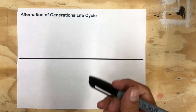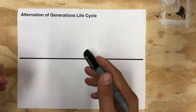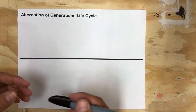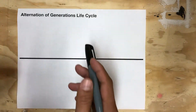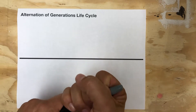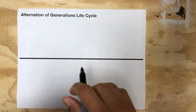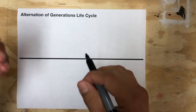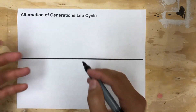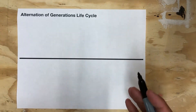We're going to draw a generalized alternation of generations life cycle, and this is something that all land plants are going to do. When I say 'generalized,' I mean we're going to draw one that you could find in any land plant — the parts we draw would exist in everything from a fern to a moss to an oak tree to a pine tree.